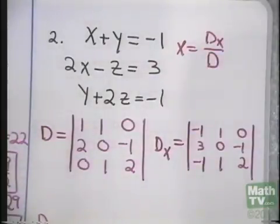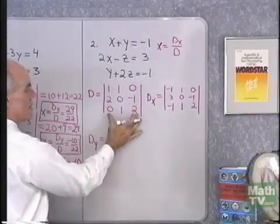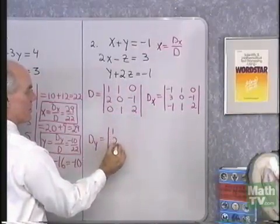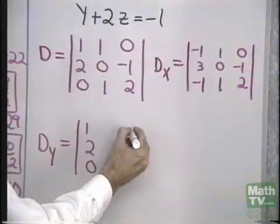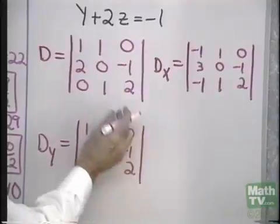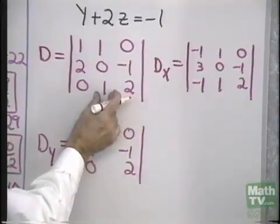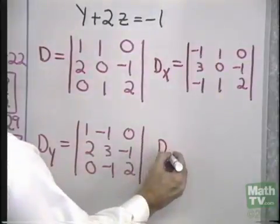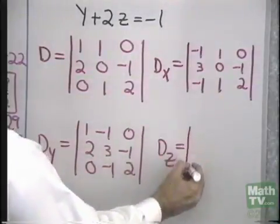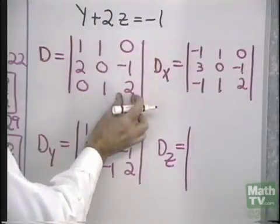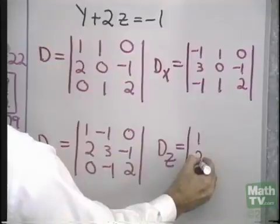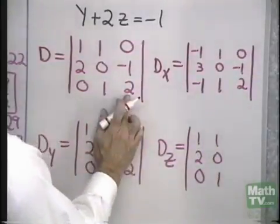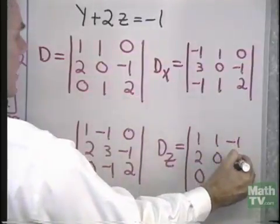Now let's form D sub y. It will look just like determinant D, except instead of the coefficients of y, I'll use the constant terms. The columns for x (1, 2, 0) and z (0, negative 1, 2) won't change — only the y column is replaced with the constant terms. Similarly, D sub z will look just like determinant D, except instead of the coefficients of z, I'll use the constant terms. The x column (1, 2, 0) and y column (1, 0, 1) won't change — only the z column is replaced with the constant terms.